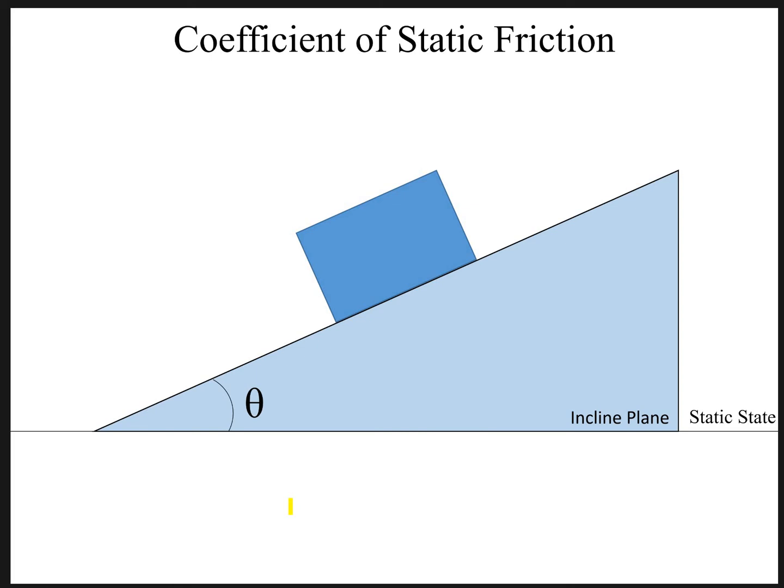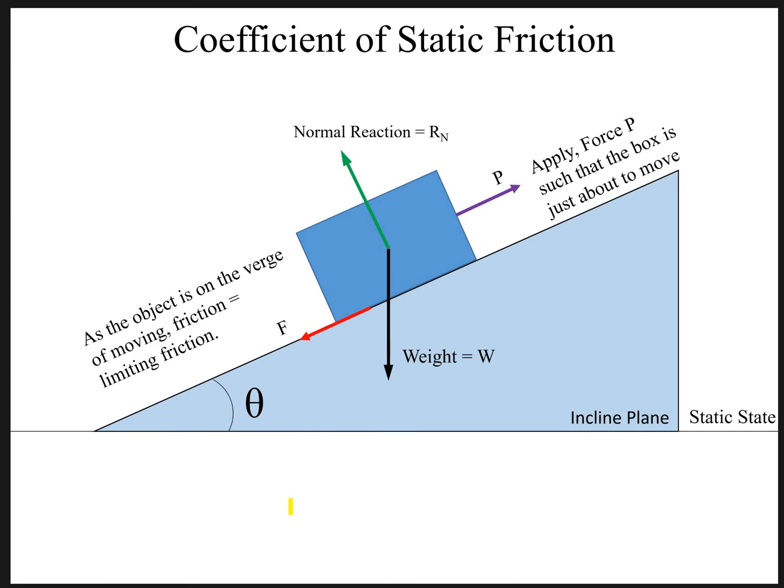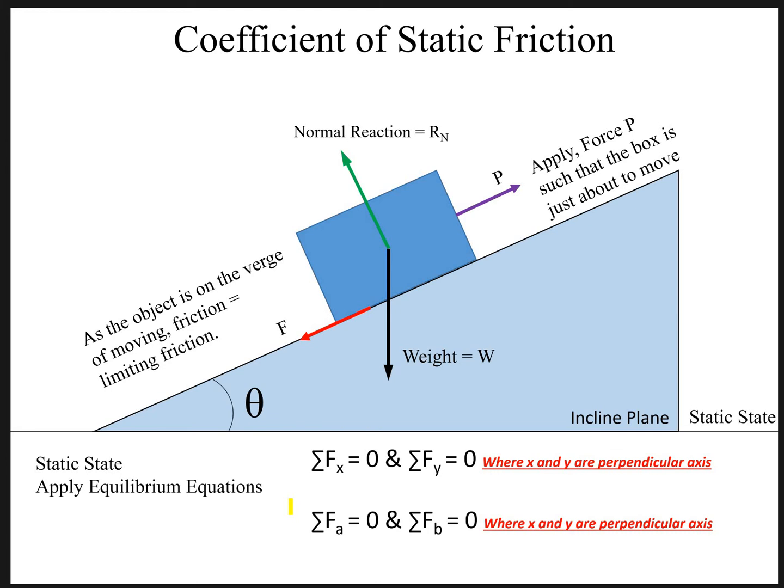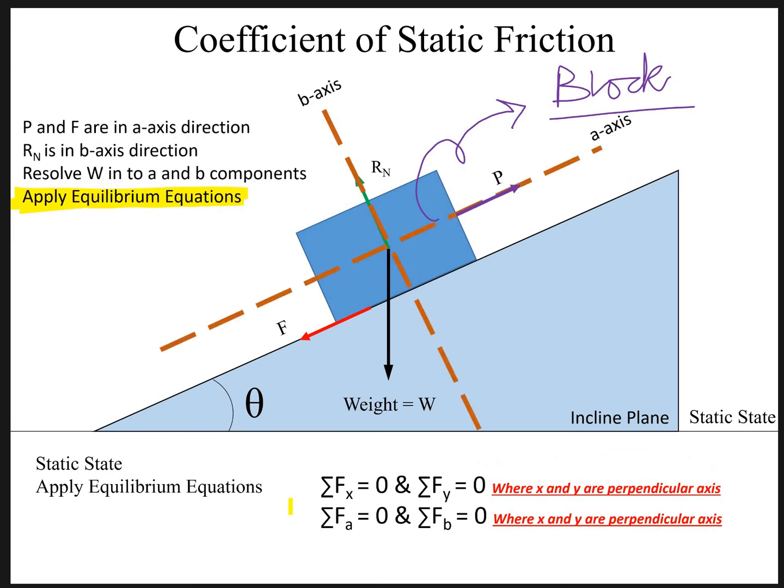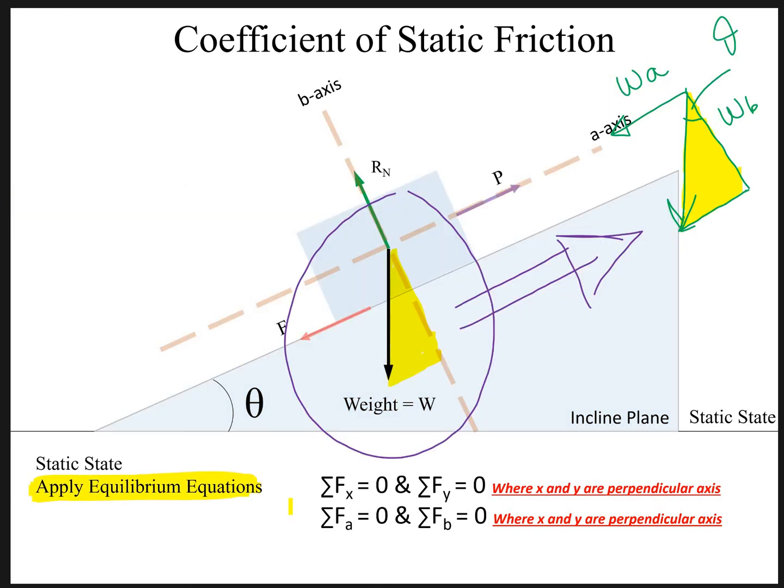We will be having four forces. One is the applied force. One will be the weight of the block which acts downwards. One will be the normal reaction force Rn which acts perpendicularly on the block and the frictional force F. Considering the static state and applying the equilibrium equations we have to resolve this weight W into its horizontal and vertical components.